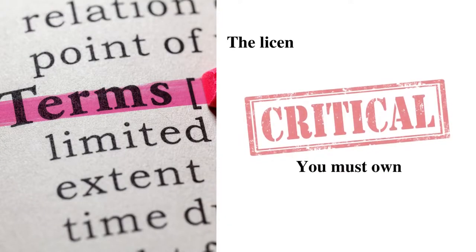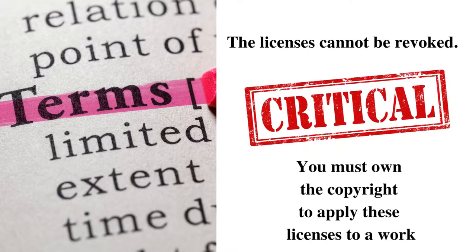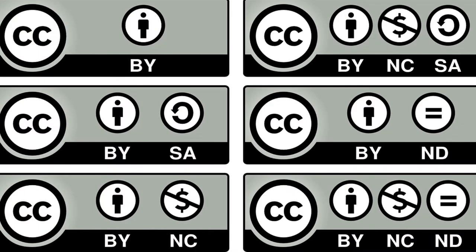Now that we've looked at all six licenses, let's take a look at a couple of key terms that apply to all of them. First, once applied, the licenses cannot be revoked from a work as long as the copyright holds — so for example, if you add a no-derivative limitation to your work, that limitation expires once the copyright expires. Second, you must own the copyright to put the license on the work. To state the obvious, you cannot release someone else's copyright-protected work under a creative commons license. Now, if the copyright is expired and the work is in the public domain, you could create a derivative that you would own the copyright for, and then if you choose, put that new work out under a creative commons license.